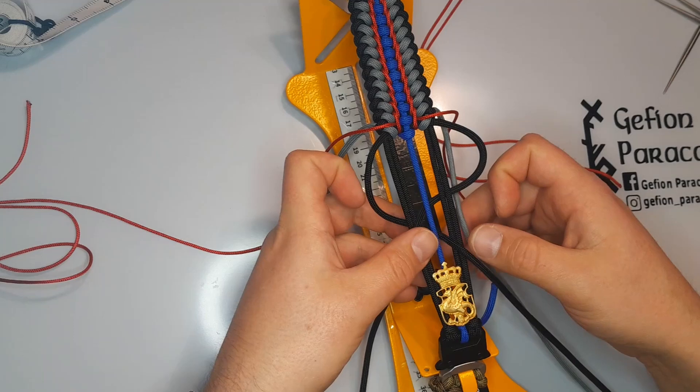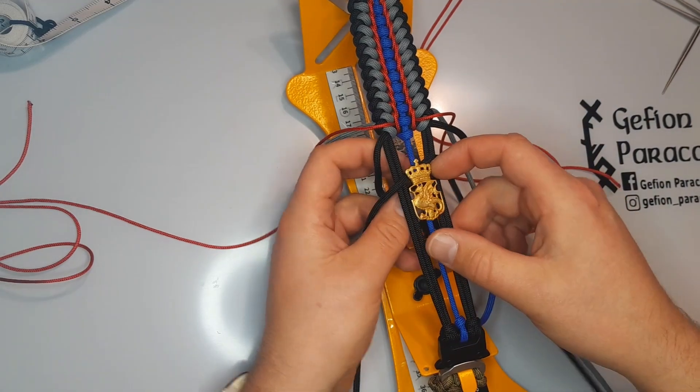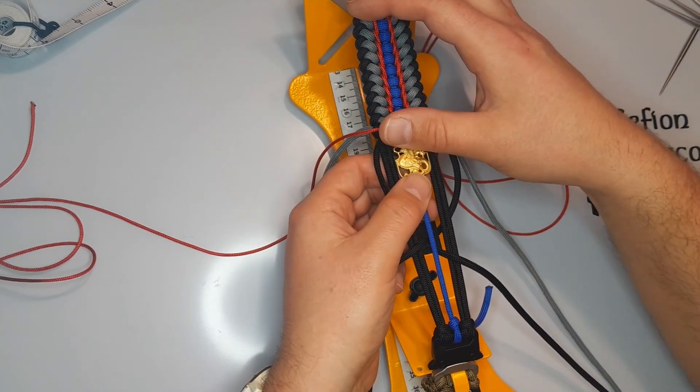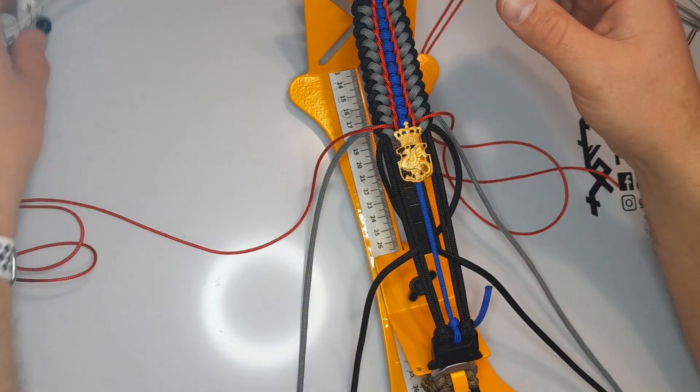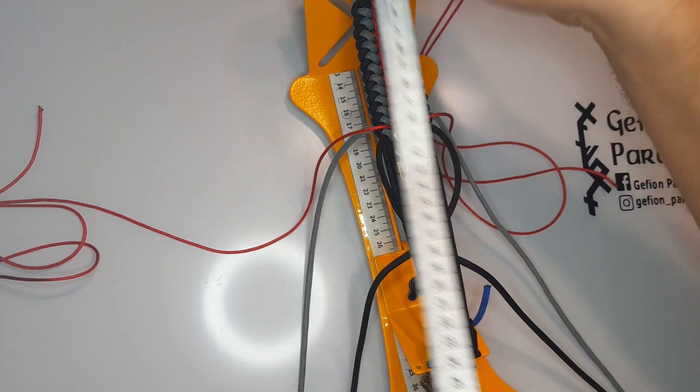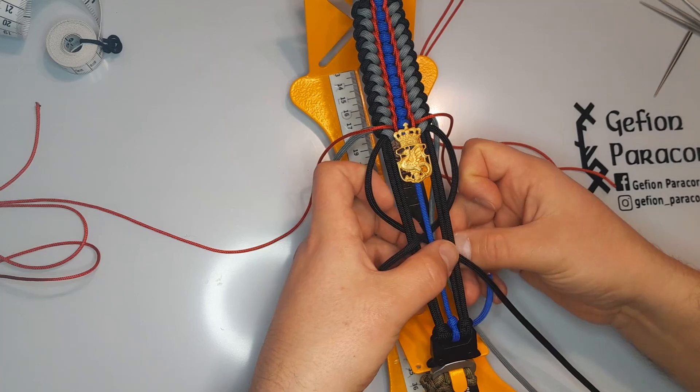But, am I sure? No, I'll just put the emblem up once again and measure it out when it's pushed all the way up. And there we have it, the middle of the emblem is right on spot.